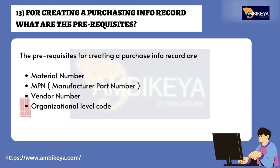Question number thirteen: for creating a purchasing info record, what are the prerequisites? The prerequisites for creating a purchase info record are: material number, MPN (Manufacturer Part Number), vendor number, and organizational level code.